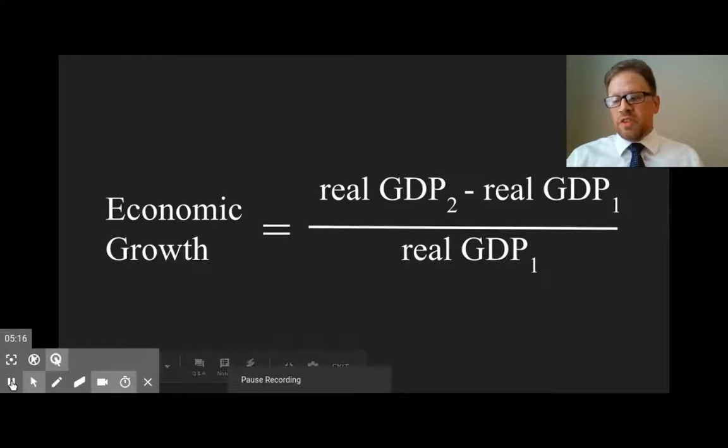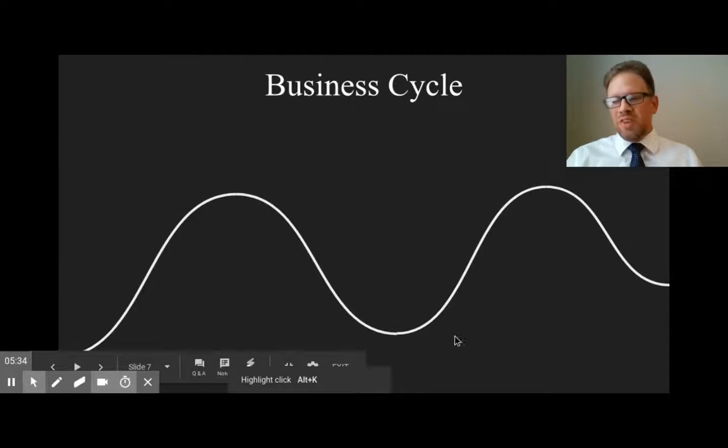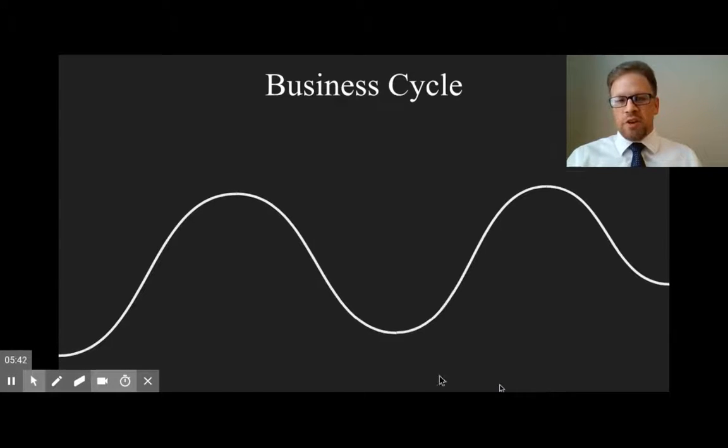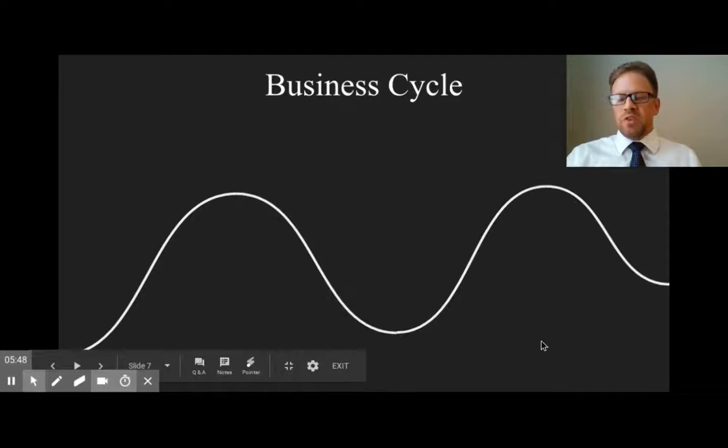In the United States and other industrialized economies, the rate of economic growth over long periods of time has been relatively steady, but short-run fluctuations in business activity are neither smooth nor completely predictable. So this leads us to another concept: the business cycle - a reoccurring pattern in economic activity characterized by alternating periods of expansion and contraction.